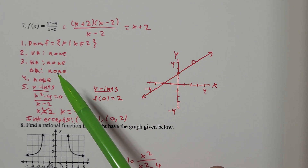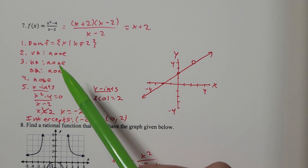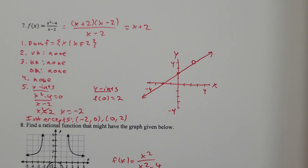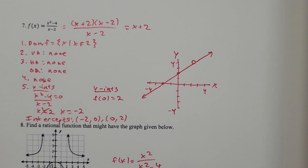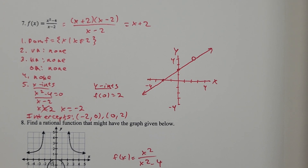There are no asymptotes, so I can skip the next two steps. I can skip step 4 because in step 4 you're determining if the function intersects the horizontal or oblique asymptote — we don't have any of those. So we're on step 5: getting the intercepts.